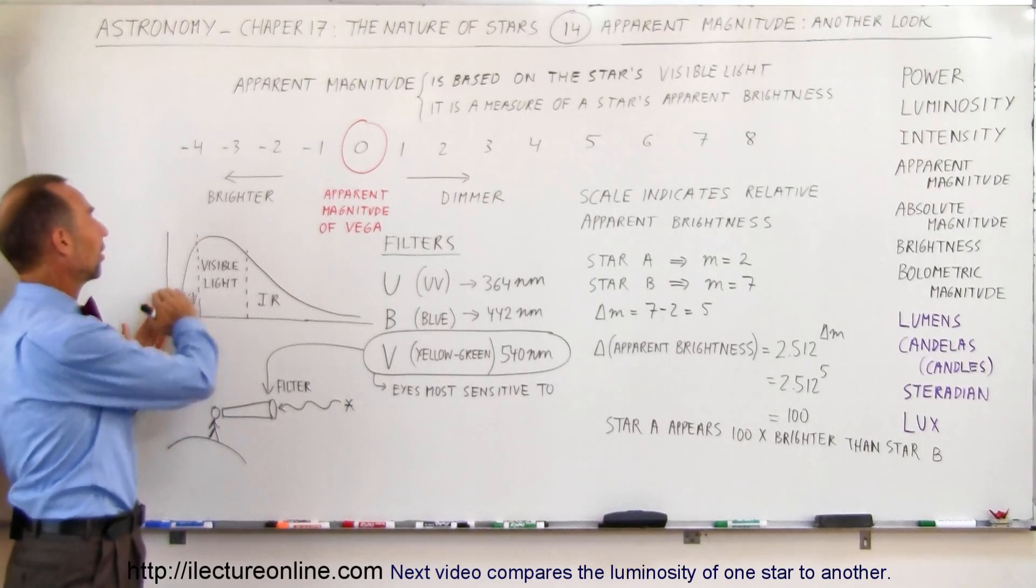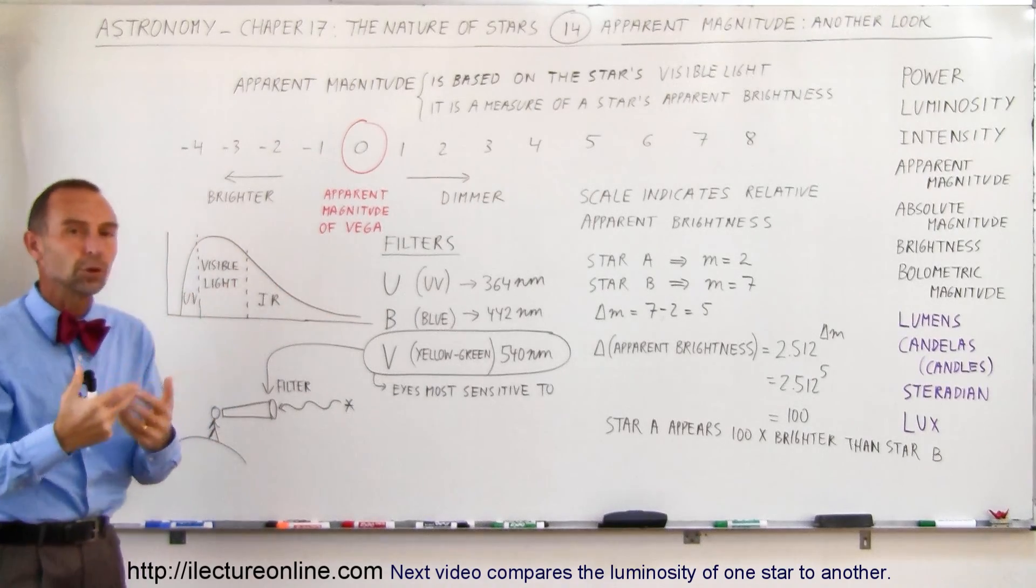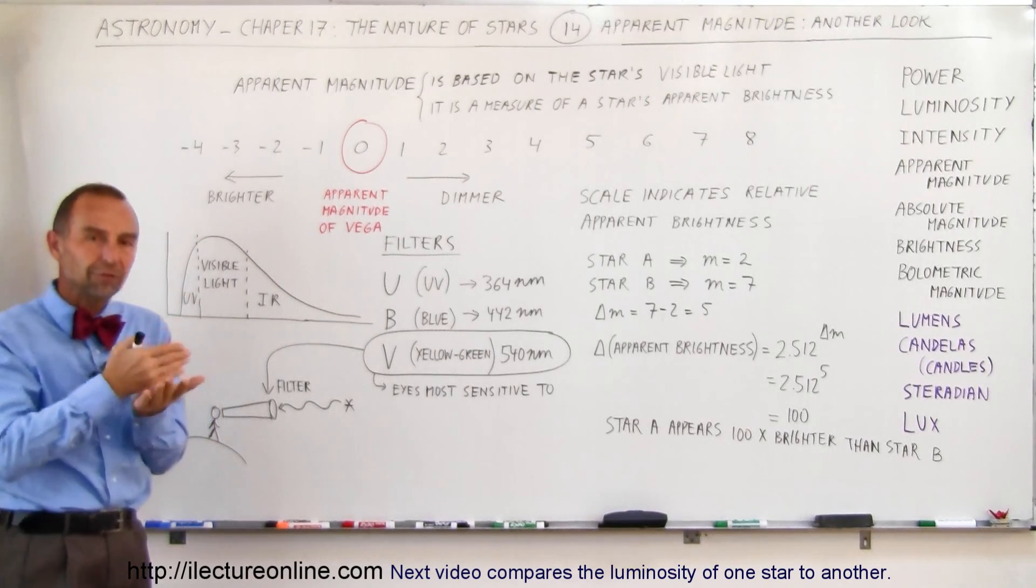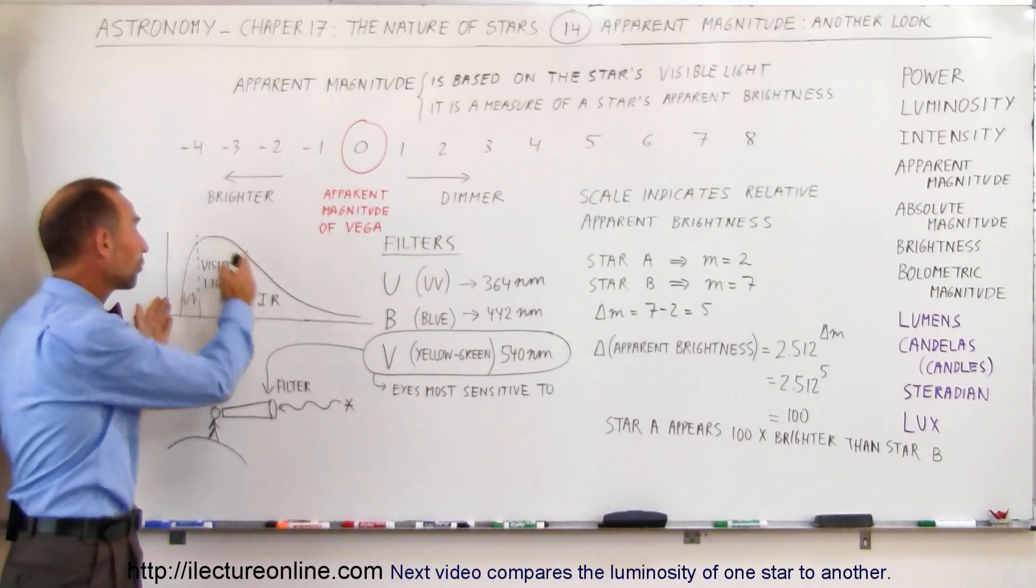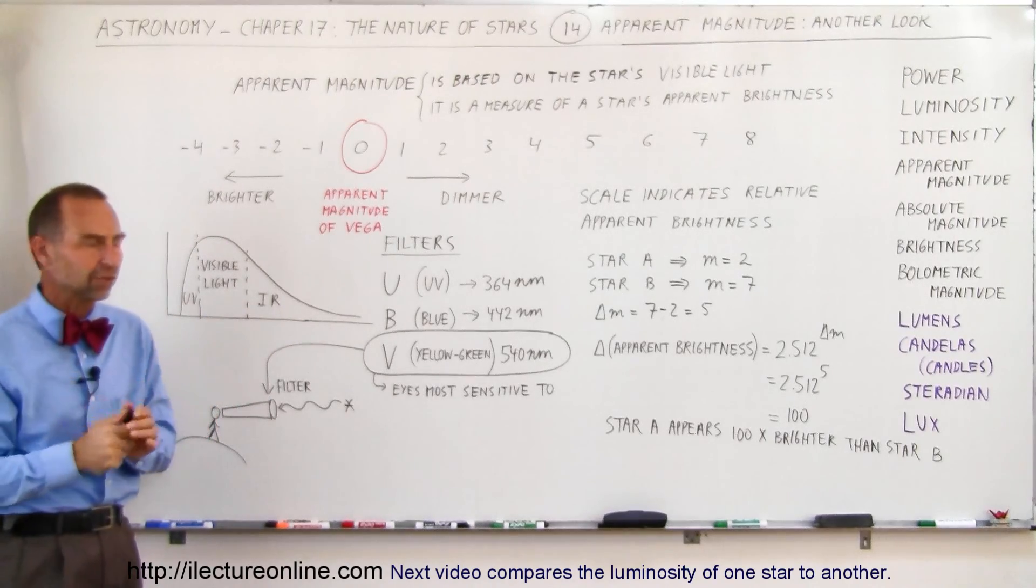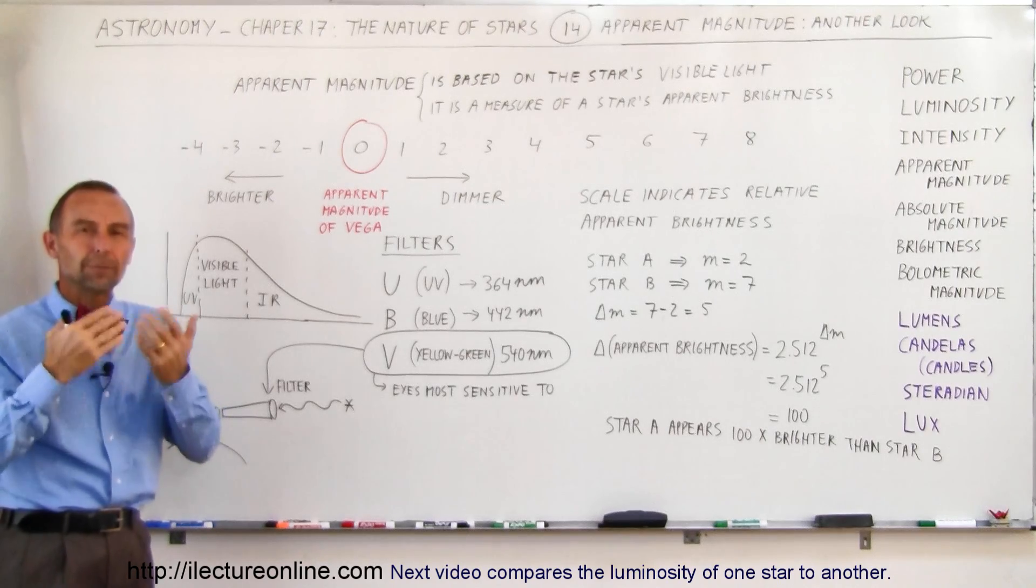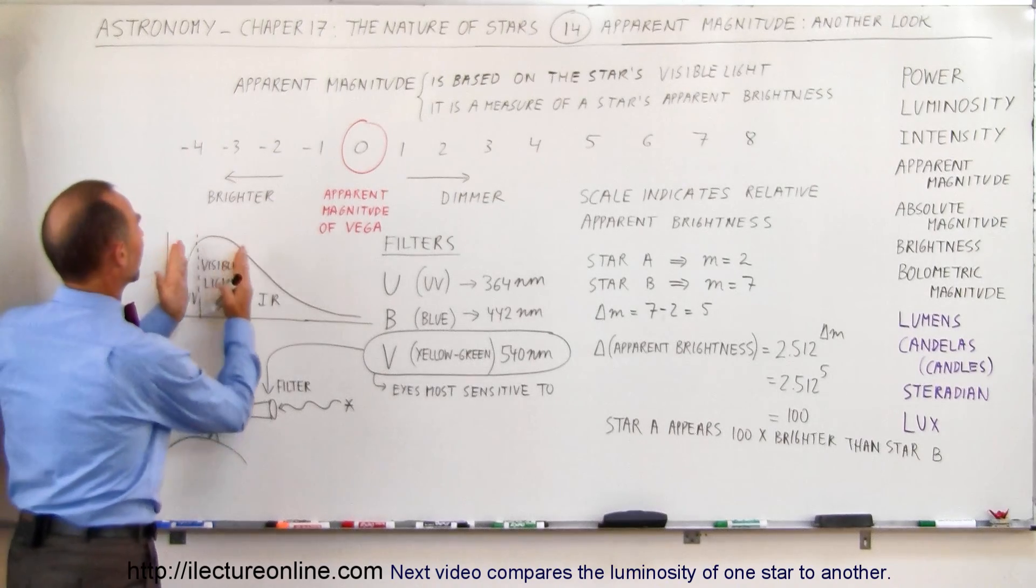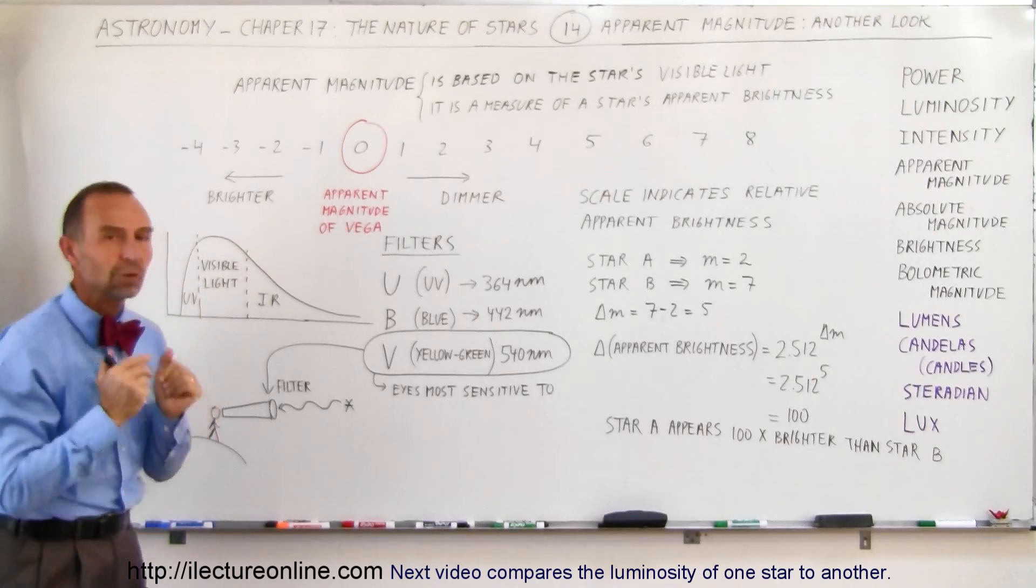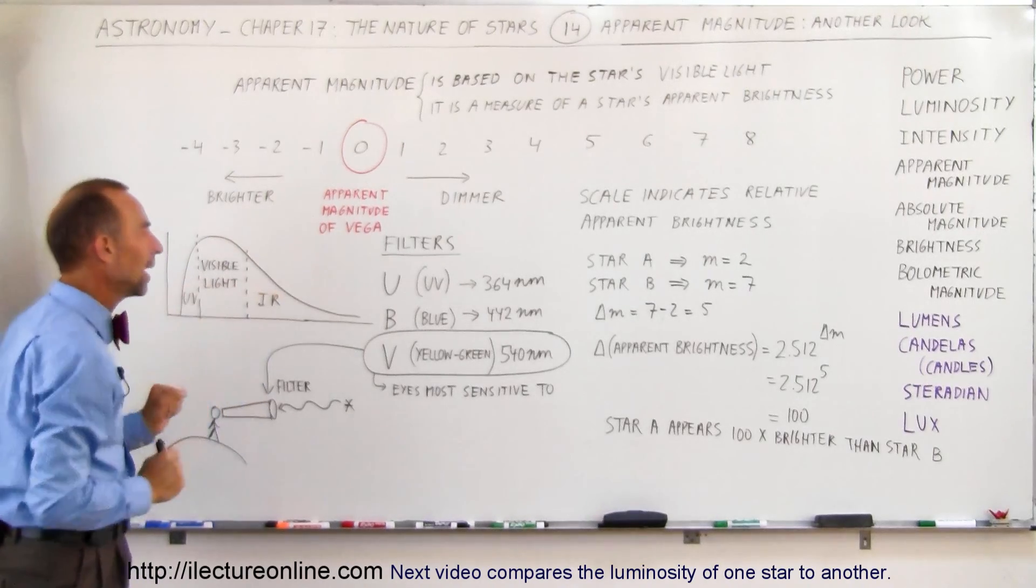The total luminosity of a star is the total power output or output of energy from the star in all three frequencies, in all three wavelengths. But when we talk about apparent magnitude or apparent brightness, we're only talking about how bright stars appear from a visual light perspective only. We ignore the UV and the infrared.